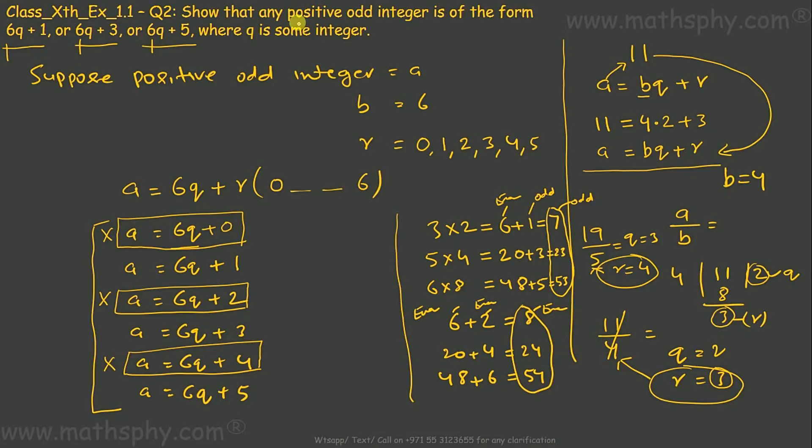What I established is any positive odd integer is of the form 6q+1, 6q+3, and 6q+5. That is what we had to show. Done.